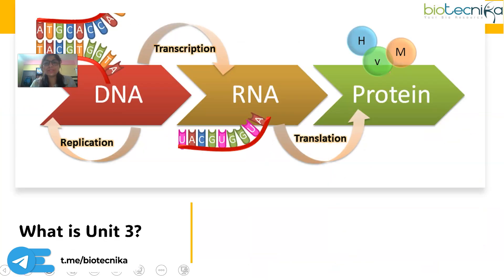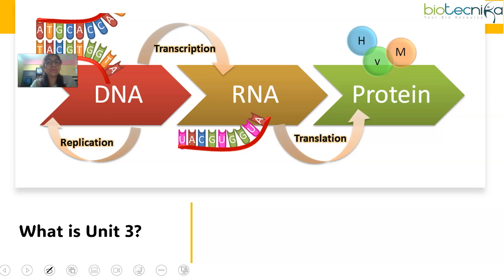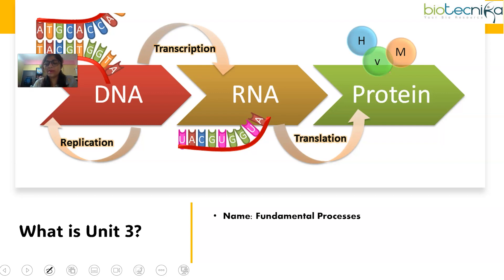Now what is Unit 3? Those of you who have gone through the syllabus will know that the name of Unit 3 in the CSIR Net Syllabus is 'Fundamental Processes.' These fundamental processes are essentially the molecular biology part. This entire Unit 3 is divided into four different subunits.